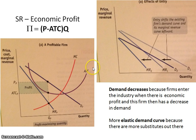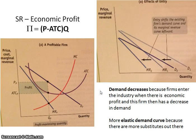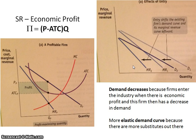So what happens in the long run is that entry and exit of firms occurs. Unlike perfect competition, these firms are not price takers, so you don't look at a side-by-side supply shift. Instead, you need to think about the competition and how demand is affected by entry and exit. Since there is economic profit, other monopolistic firms will be very interested and will enter into the industry.